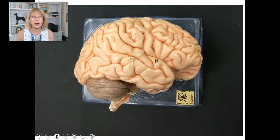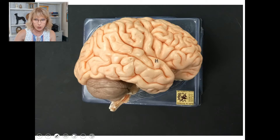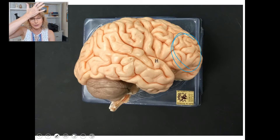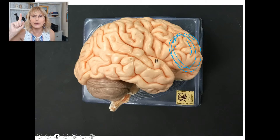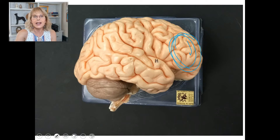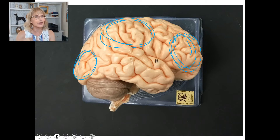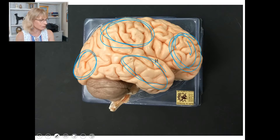I also have videos on YouTube where I go over the different lobes of the brain. This is the frontal lobe, right here. The frontal lobe sits right under the frontalis muscle, which sits right under the frontal bone. Here's the parietal lobe, which sits right under the parietal bone. This is the occipital lobe, which sits right under the occipital bone. And this is the temporal lobe, which sits right under the temporal bone.